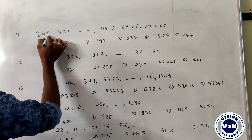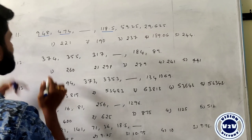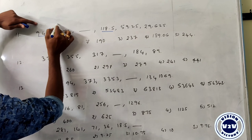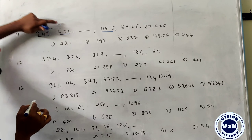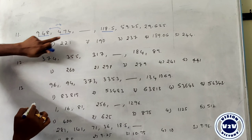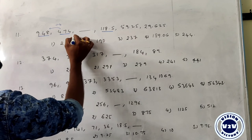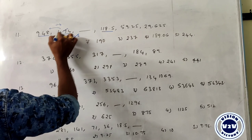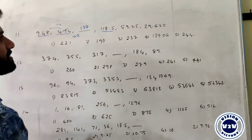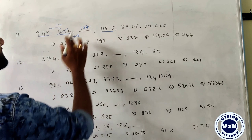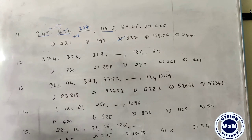Next: 948, 474, 118.5. Each term is divisible by 2: 948 divided by 2 is 474, 474 divided by 2 is 237, and 118.5 divided by 2 is 59.25. Working from 118.5 backward confirms division by 2 each time. The answer is 237.